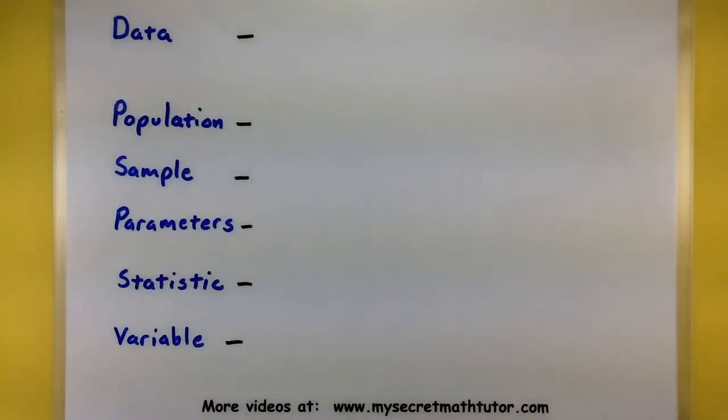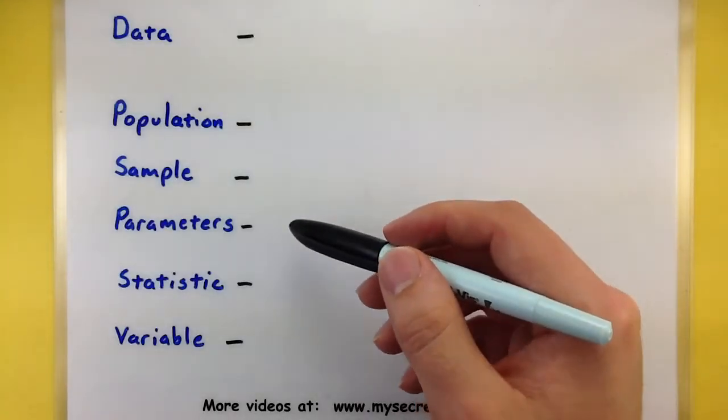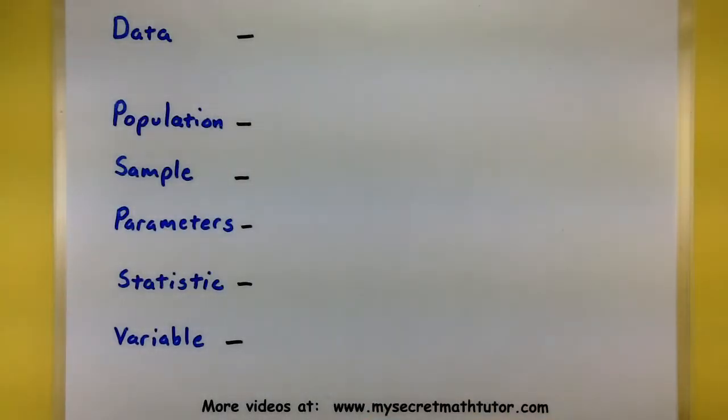In my example, let's say that we are trying to figure out if men over 50 can lose weight on the pancake diet. So, we'll describe what the data is, what would be the population, sample, parameters, statistics, and variables for this study.